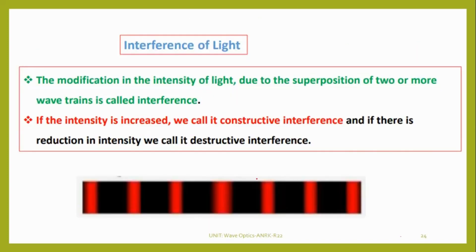Next one, what is the interference of light? The modification of the intensity of light due to superposition of two or more wavefronts is called interference. Interference means the pattern we can see. Can all types of waves give interference? No.